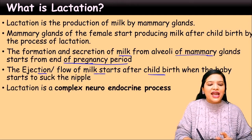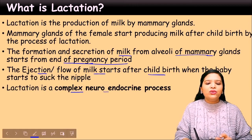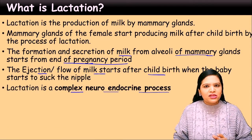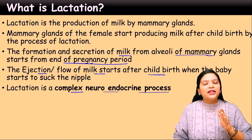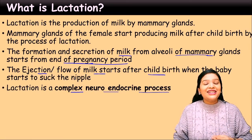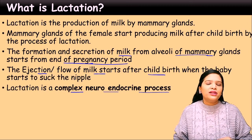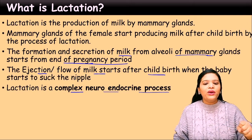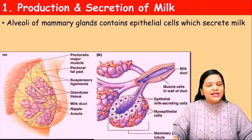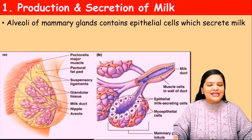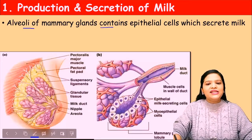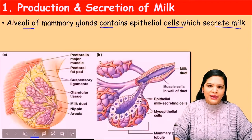Lactation is actually a complex neuroendocrine process. What does neuroendocrine mean? It involves the nervous system — that means the brain — and the endocrine glands. So it is a very complex neuroendocrine process. Now let us see how the milk is produced and secreted. The alveoli of the mammary gland contain epithelial cells which secrete the milk.